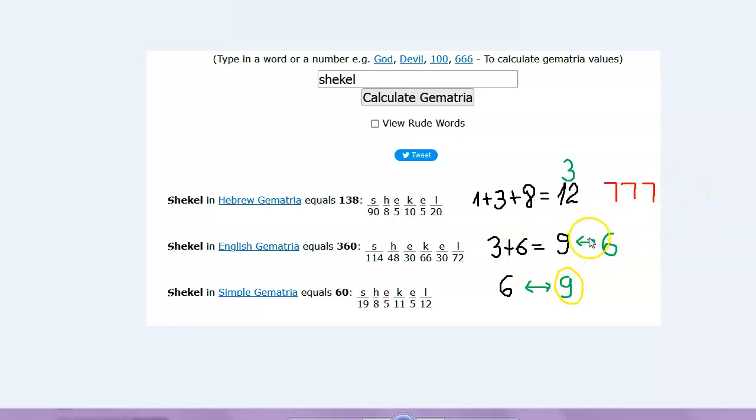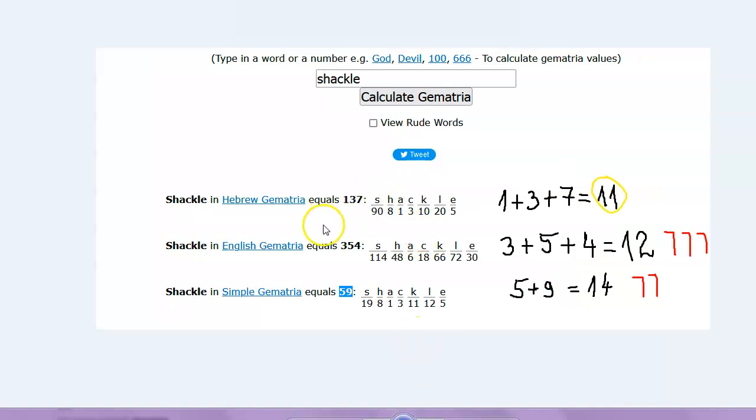And also notice the triple seven - 12 is the triple seven, 12 is the reverse 21. This is the shackle. And the shackles, if you reduce the Hebrew, English, and Simple, this is the reduction you get: 11, 12, 14.